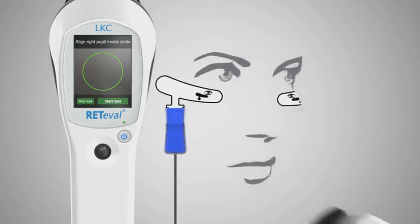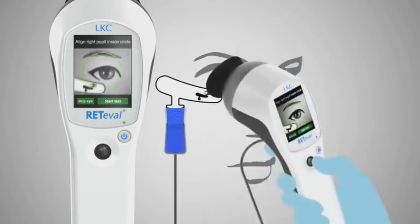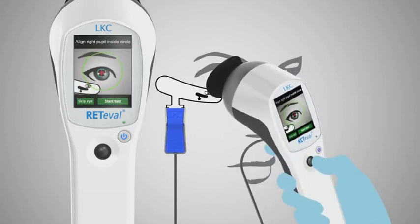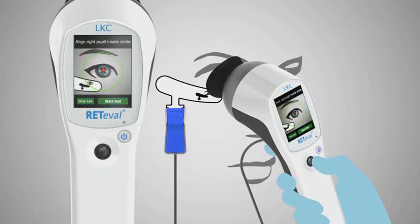Position the device over the patient's eye under which the sensor strip is connected. Ask the patient to look at the red fixation LED and using the live video provided by RedEval as a guide, position the pupil of the eye within the green circle shown on the display.